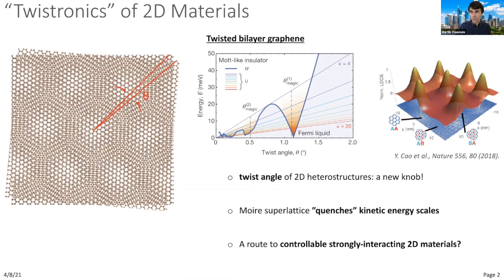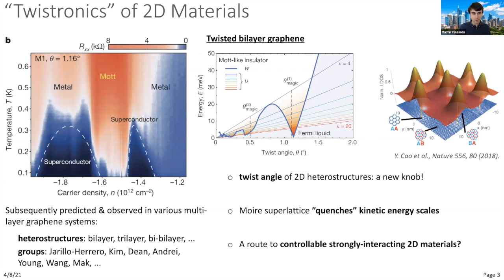The paradigm set by twisted bilayer graphene showed that at small twist angles, particularly around magic angles, superlattice potential interference acts to quench the kinetic energy scale and bring interaction-mediated physics to the forefront. In graphene, this led to well-known observations of correlated insulating states and superconductivity as a function of filling, finely tunable by gate control, extended now to bilayers, trilayers, and bi-bilayers in various experimental groups.